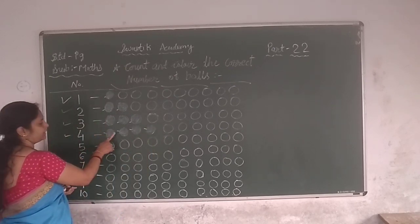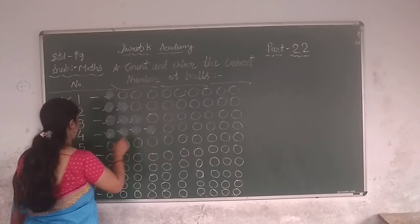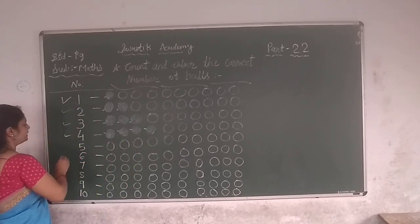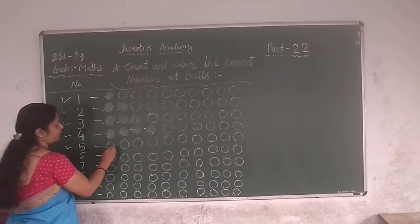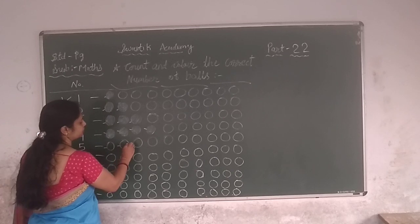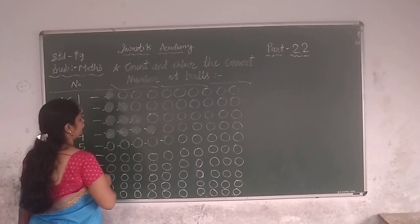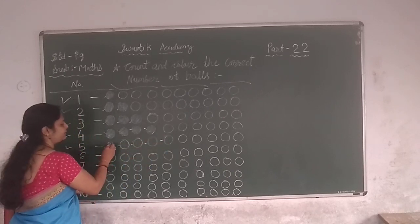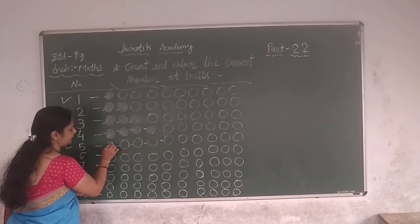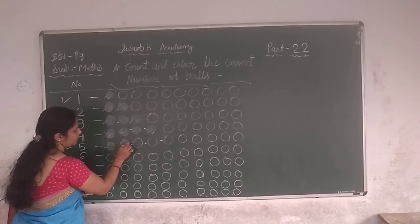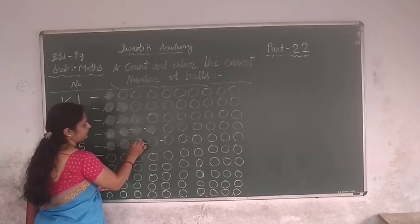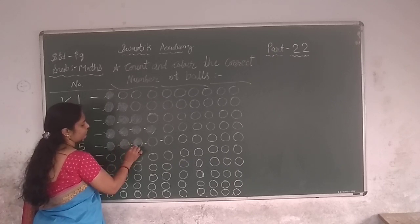1, 2, 3, 4. 1, 2, 3, 4. Now number 5: 1, 2, 3, 4, 5. So 5. So 1, 2, 3, 4, so 5.